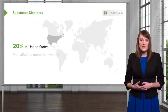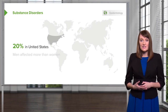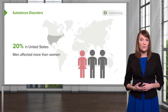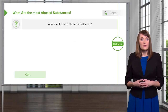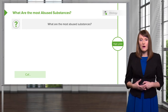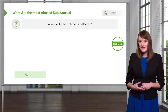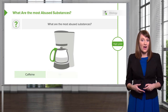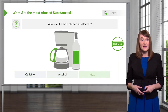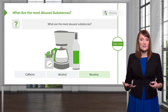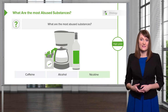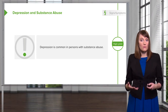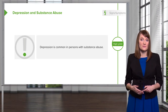Twenty percent of people in the United States have a substance use disorder, and men tend to be affected more than women. The most commonly abused substances are caffeine, alcohol, and nicotine — these are actually the most widely abused substances. Depression is also very common as a comorbidity in people who abuse substances.